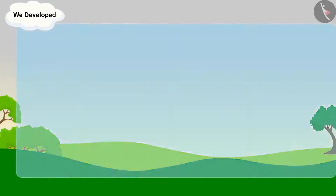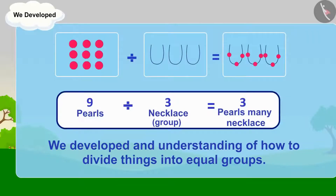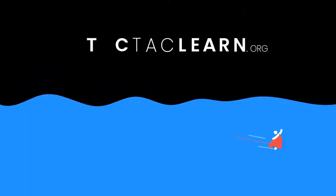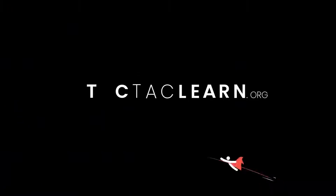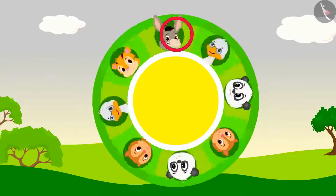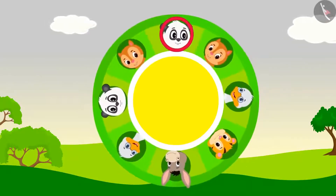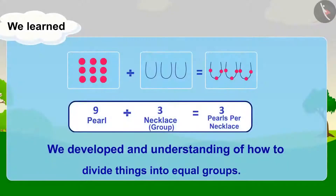In this lesson, we developed an understanding of how to divide things into equal groups. In the previous lesson we covered this concept — let us now look at some examples to understand it in more detail.